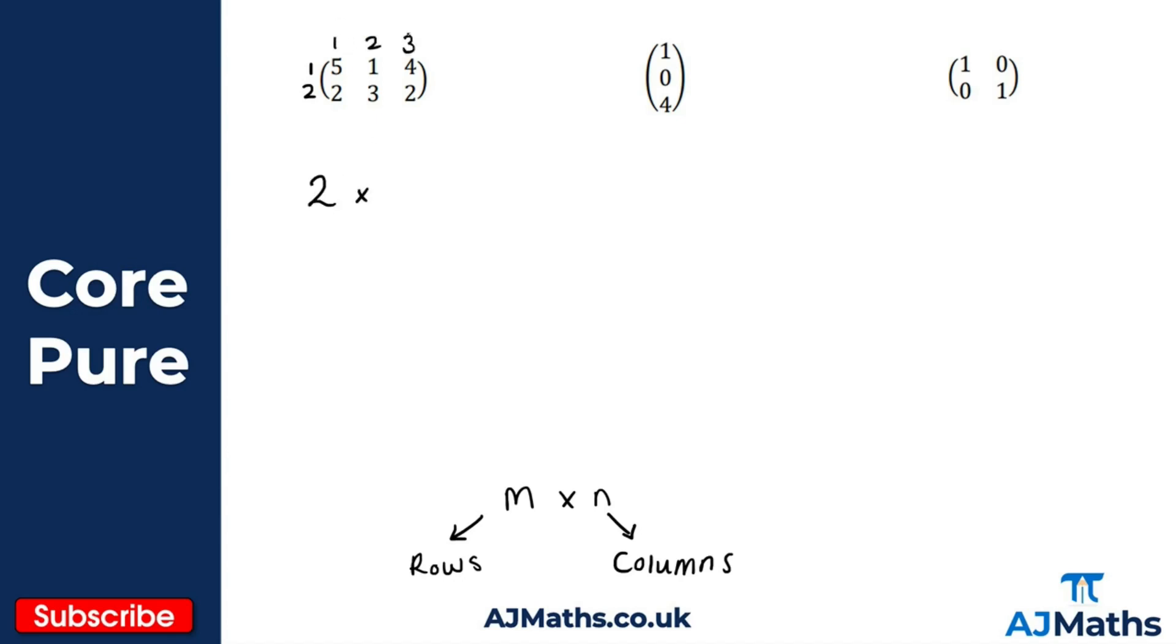For the next example again start by counting the number of rows, we've got one, two, three rows here and then we've got in this case nice and straightforward just simply one column, so this is a three by one matrix.